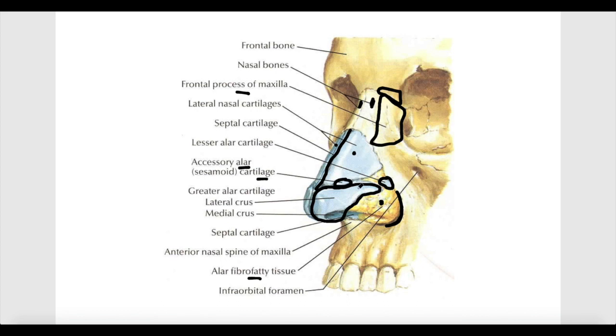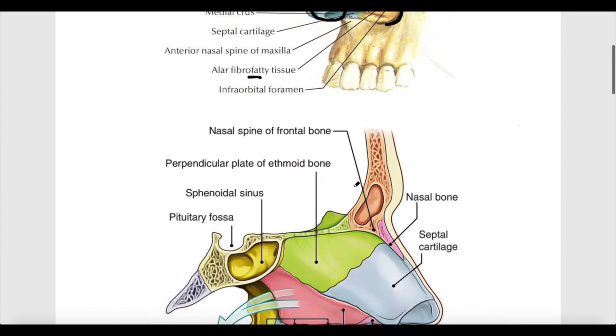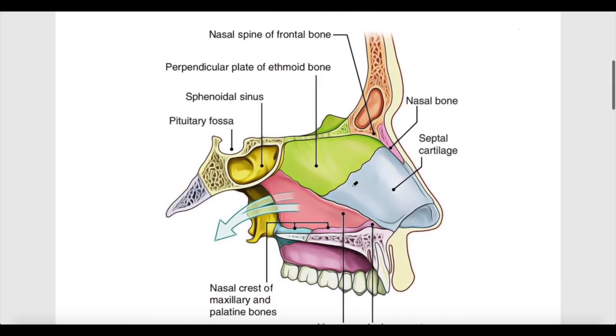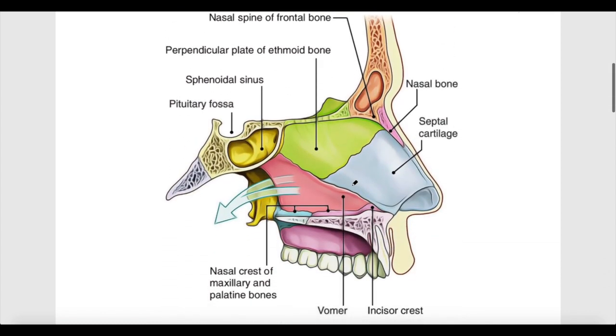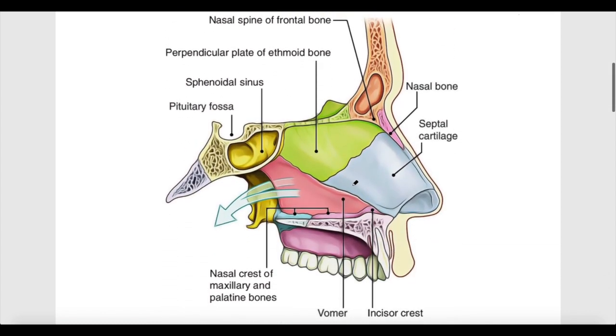If we go internally, we look at the second part of the nose which is called the nasal cavity. The nasal cavity is that hidden part of the nose located inside the skull.